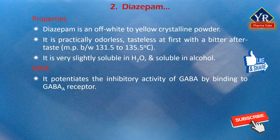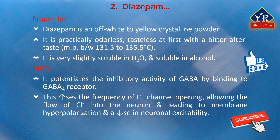Diazepam potentiates the inhibitory activities of GABA by binding to the GABA-A receptor located in the limbic system and in the hypothalamus. This increases the frequency of chloride channel opening, allowing the flow of chloride ions into the neuron, ultimately leading to membrane hyperpolarization and a decrease in neuronal excitability.